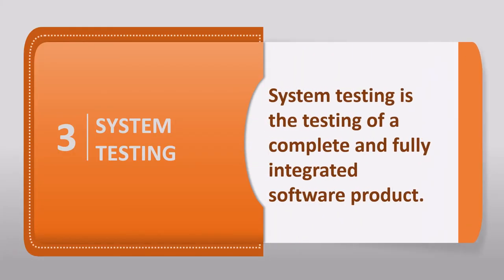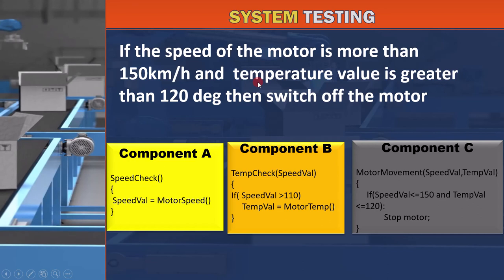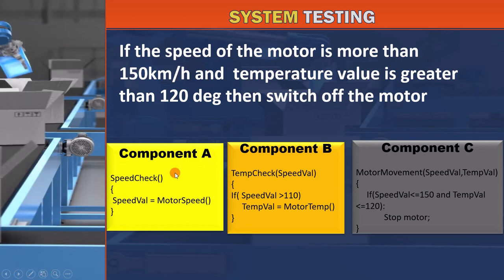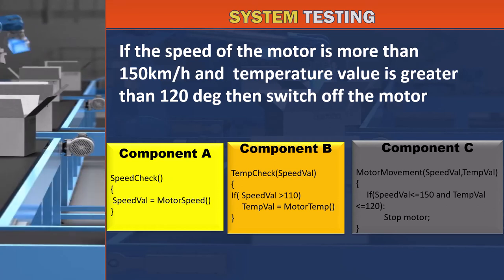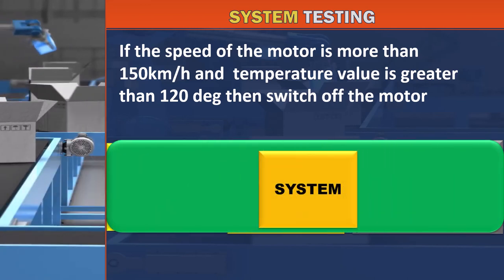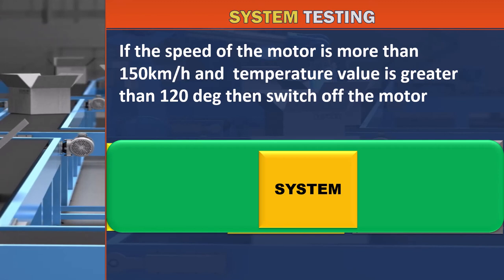Let's see the system testing definition. System testing is the testing of a complete and fully integrated software product. The key phrase here is 'complete and fully integrated,' meaning that integration testing has been done and all components are fully integrated. Using the same example: we know there are three components in the code, but when performing system testing, we don't care about the components — we only care about the complete system.